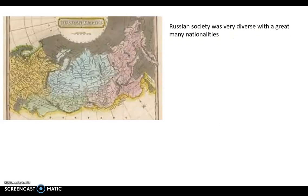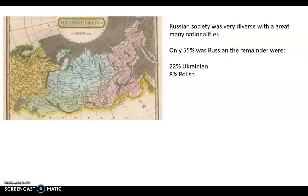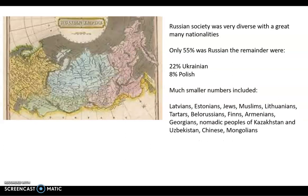In terms of the empire, society was very diverse with a great many nationalities within it. Only 55% of the Russian empire was actually Russian. The two biggest groups within the empire were Ukrainians, who were about 22%, and Poles, who were about 8%. Then there were many other smaller groups — Latvians, Estonians, Jews, Muslims, Georgians, various nomadic people who lived in places like Kazakhstan and Uzbekistan, some Chinese in the far east of Russia, as well as people from Mongolia — a whole variety of nationalities within Russia.